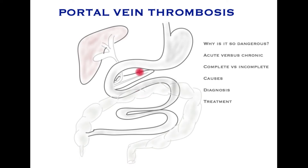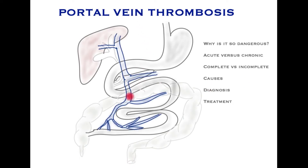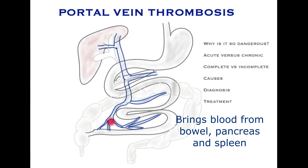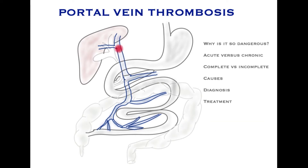Now let's see how the portal system functions. The portal system is a network of veins that takes the blood from the bowel — the small bowel and the large bowel — and channels it from smaller veins into bigger veins, which ultimately form the portal vein. This takes the blood up into the liver for the liver to extract all the goodness out of the food that we eat. Once the liver has filtered the blood, it is passed into hepatic veins, or liver veins, which transport the blood towards the heart and the main circulation.